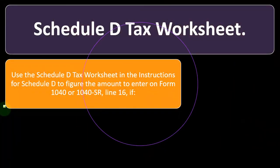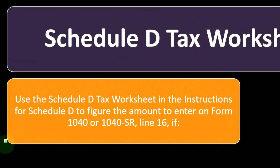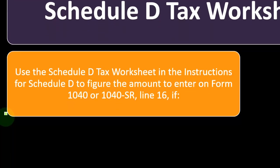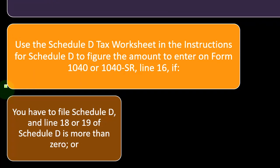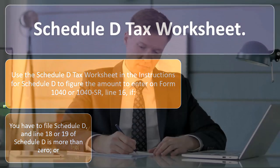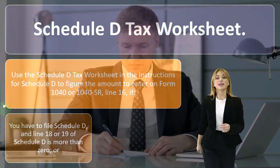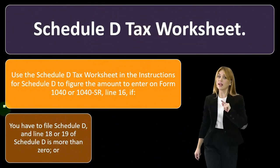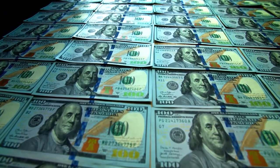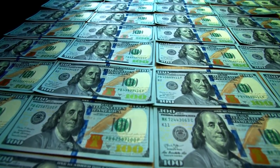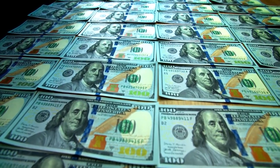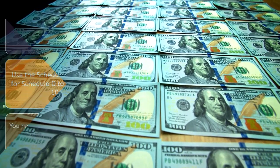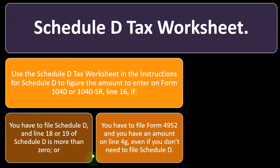Schedule D tax worksheet: use the Schedule D tax worksheet in the instructions for Schedule D to figure the amount to enter on Form 1040 or 1040-SR line 16, if you filed Schedule D and line 18 or 19 of Schedule D is more than zero. This is because Schedule D deals with capital gains and losses — usually from the sale of stocks — and long-term capital gains may have more favorable tax rates than ordinary income. The income from Schedule D flows into taxable income, but it can't be taxed at the same progressive rates because it's not ordinary income; you must break it out to apply the capital gains rates.